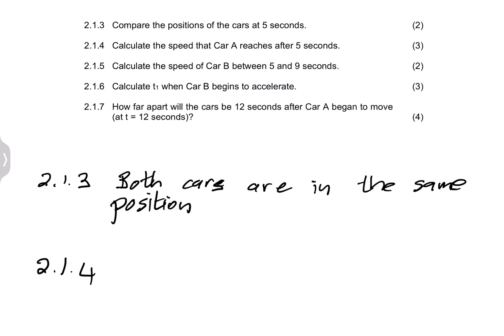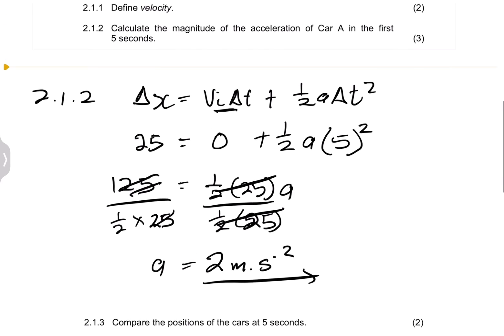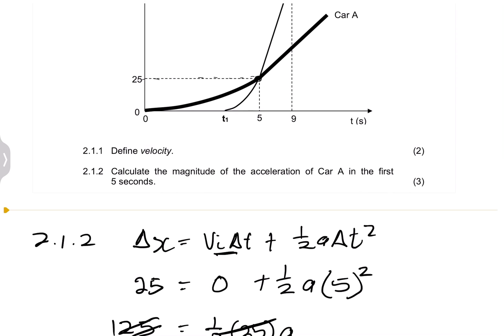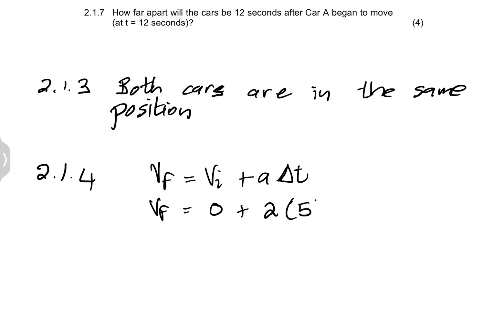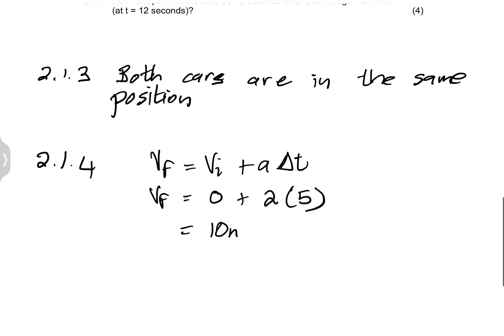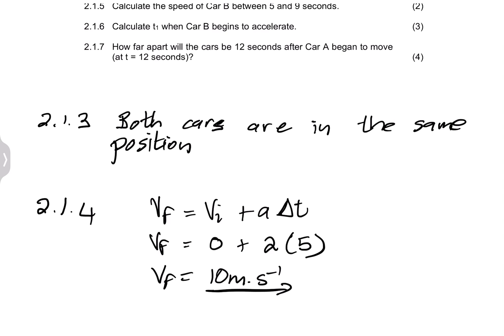For 2.1.4, we're asked to calculate the speed that car A reaches after five seconds. We have the acceleration and the displacement, so I'll use: V_F = V_I + a·ΔT. The initial velocity was zero, acceleration is 2 m/s², and the time was five seconds. So the velocity would be 10 m/s at the fifth second. You could have used another equation of motion and still get the same answer.